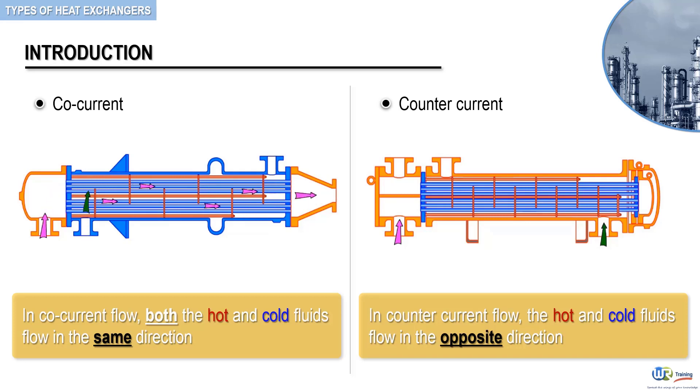On the right side of the screen, you can see a second heat exchanger in a counter-current flow arrangement. Here also it is assumed that the hot fluid flows through the tubes while the cold fluid flows through the shell.